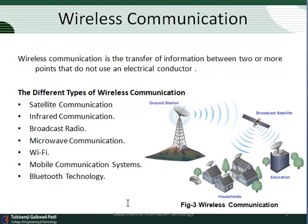Next is wireless communication. What is wireless communication, and what are its types? Wireless communication is the transfer of information between two or more points that do not use an electrical conductor — there is no need for electrical wires for communication. The different types of wireless communications are: satellite communication, infrared communication, broadcast radio, microwave communication, Wi-Fi, mobile communication systems, and Bluetooth technology.